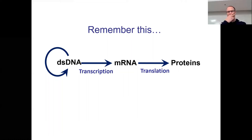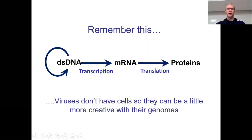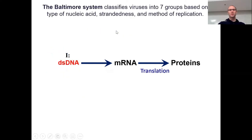So this is where we left off. There are several types of viral genomes out there. It's a good recap to remember these are the processes cells have to do - transcription and translation. Viruses have so many different types of genomes they don't necessarily do all of these things. There are actually seven types of viral genomes that have been classified under something called the Baltimore system.